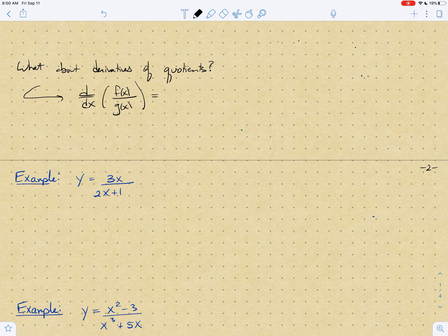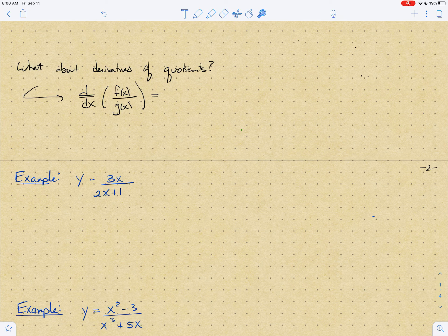So what about derivatives of quotients? Hopefully you can guess that it's not going to be f prime over g prime. The derivative of f over g is not f prime over g prime.